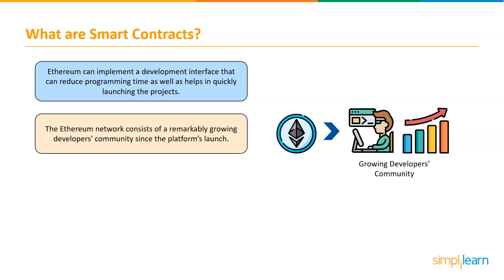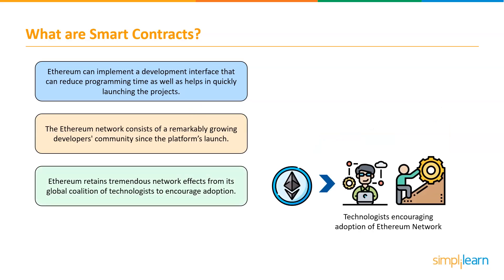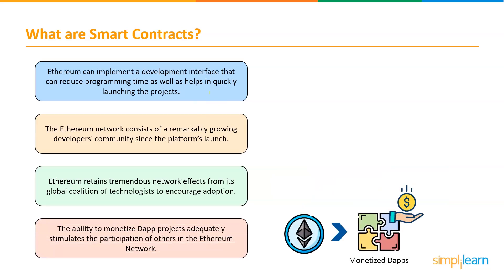Second, the Ethereum network consists of a remarkably grown developers community since the platform launched. Third, Ethereum retains tremendous network effects from its global coalition of technologies, which continue to pursue the network and actively develop users' resources to incur adoption. And last but not least, the ability to monetize DApp projects adequately simulates the participation of others in the Ethereum network.